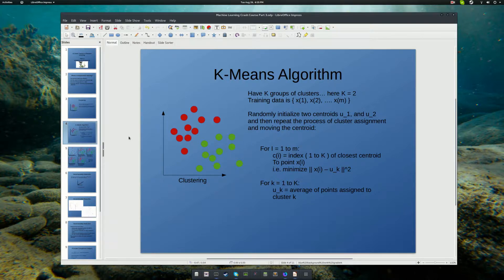One incredibly powerful algorithm for clustering data is something called the k-means algorithm. Here we have k-groups or clusters, and in our case, we're just going to set k equal to 2. And your training data is x1, x2, all the way up to x of m, where m is the total number of your training data points.